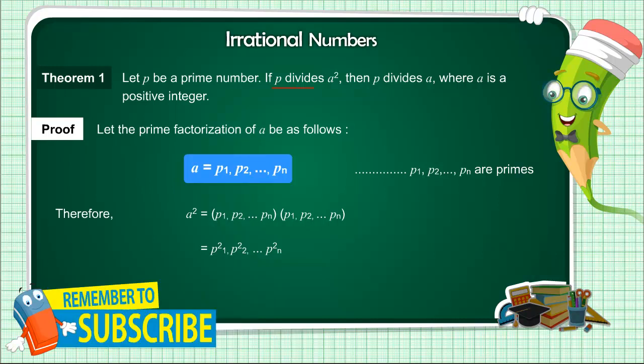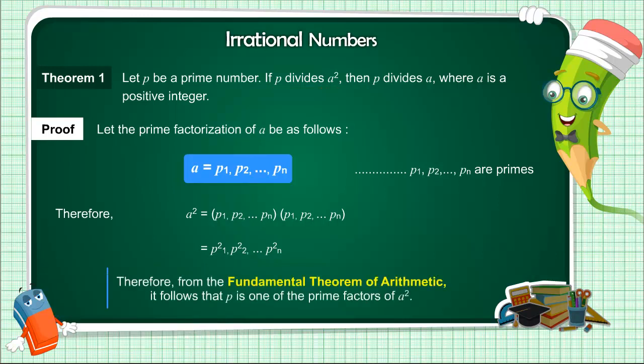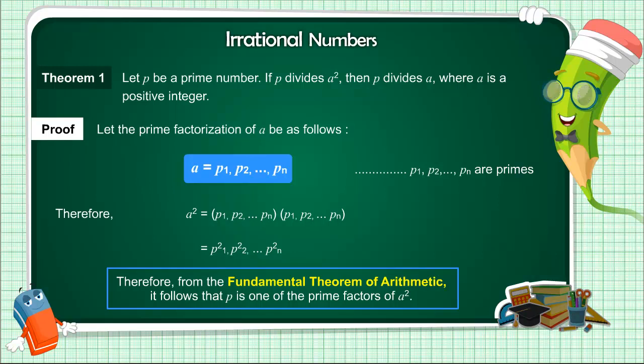Now, we are given that P divides A squared. Therefore, from the Fundamental Theorem of Arithmetic, it follows that P is one of the prime factors of A squared.